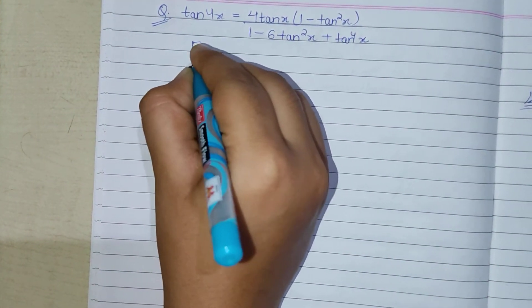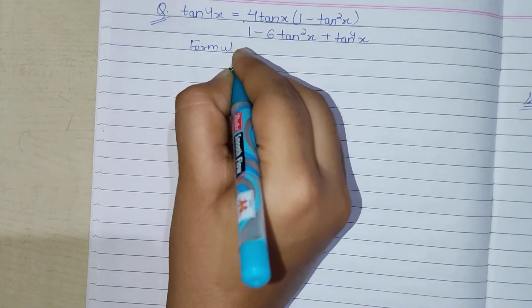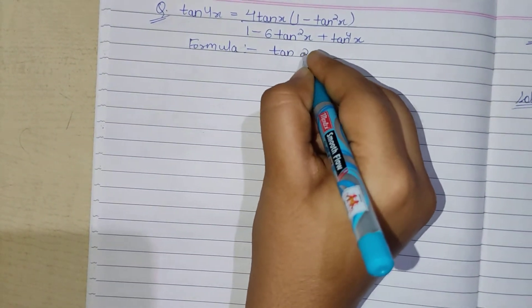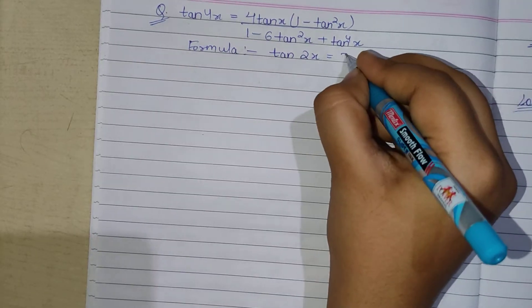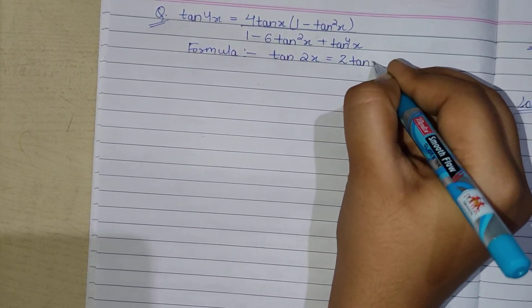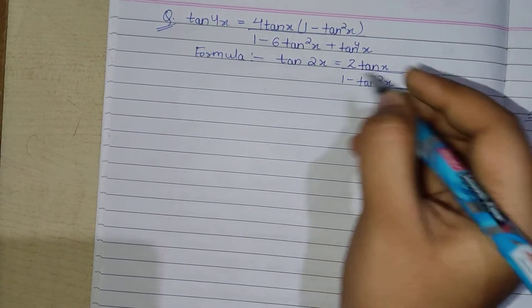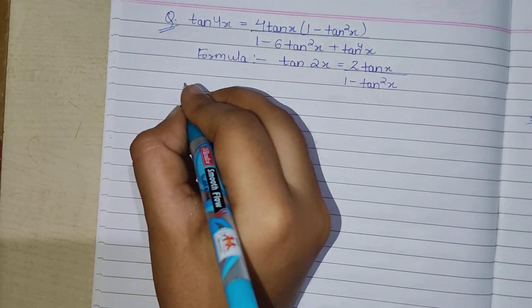Here we are going to use the formula of tan 2x. Formula is tan 2x equals 2 tan x upon 1 minus tan square x. Let's start solving the equation.